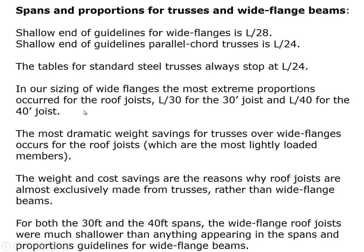The most extreme wide flange proportions occurred for the roof joists: we ended up with a 12-inch deep beam in both the 30-foot and 40-foot span cases, giving depth ratios of L/30 and L/40 respectively. L/30 is slightly outside the L/28 guideline range, and L/40 is way outside it — and that member was disproportionately heavy. The most dramatic weight savings for trusses over wide flanges occur for roof joists, which are the most lightly loaded members, and that's where trusses are most beneficial.